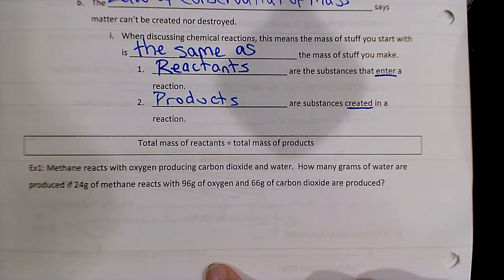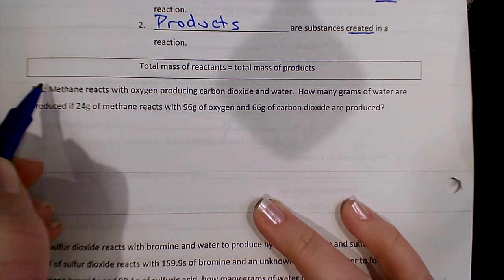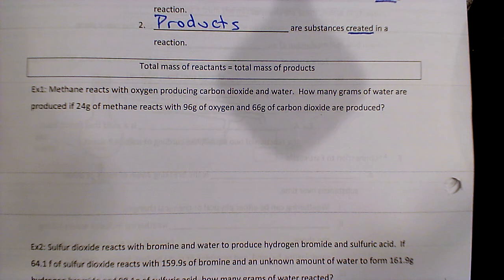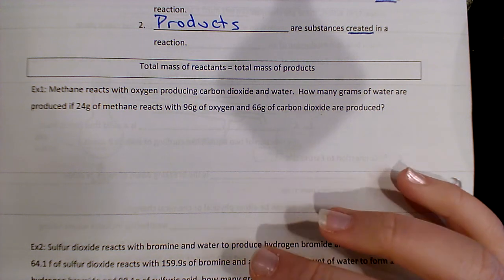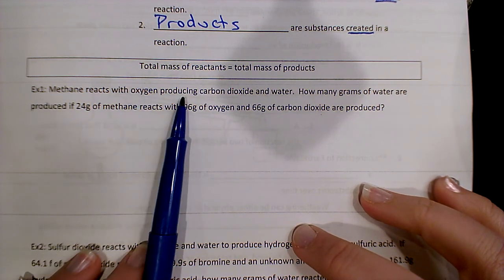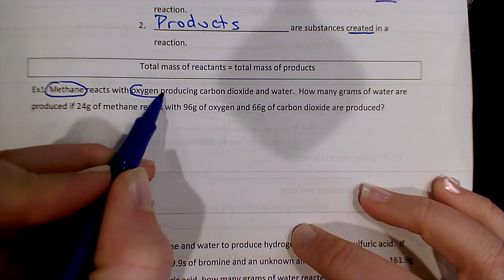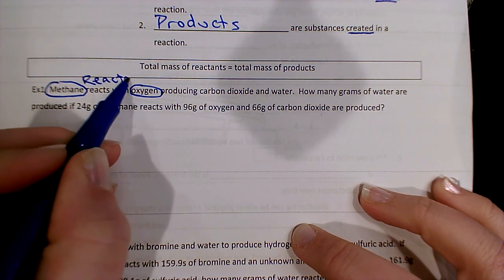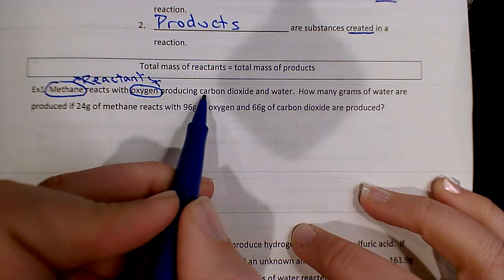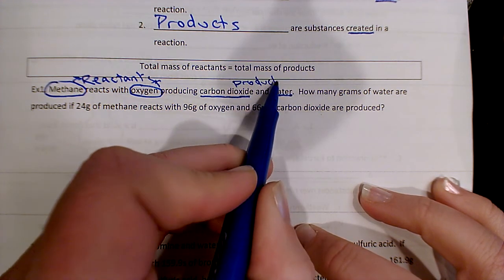So we have here, we don't have to really know what these are at all to be able to do the math here. It says methane reacts with oxygen, producing carbon dioxide and water. So I read that sentence, and I think, what entered the reaction? What did I start with? And then what did I create? What did I produce? Methane reacts with oxygen, producing carbon dioxide and water. So it becomes pretty clear, these two things are my reactants. They're coming into the reaction, and producing carbon dioxide and water, these are going to be my products.